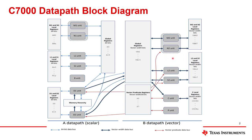There are units running around on both sides. A more specific term for them is functional units. If you think of a single functional unit as like a very limited form of a CPU — that's not perfectly right, but it's a good way to think of it as a start. There are several of these on both sides.